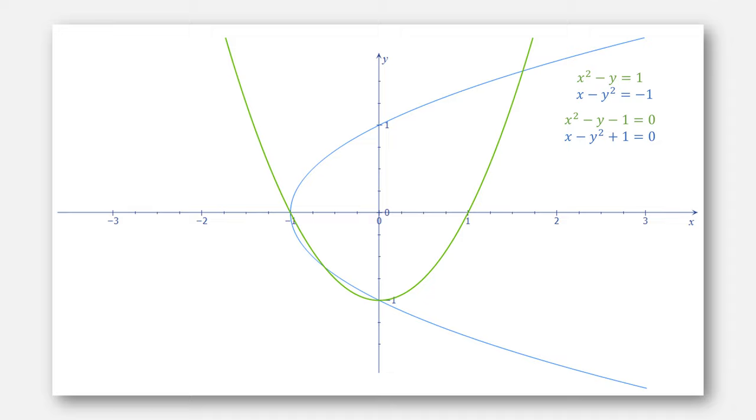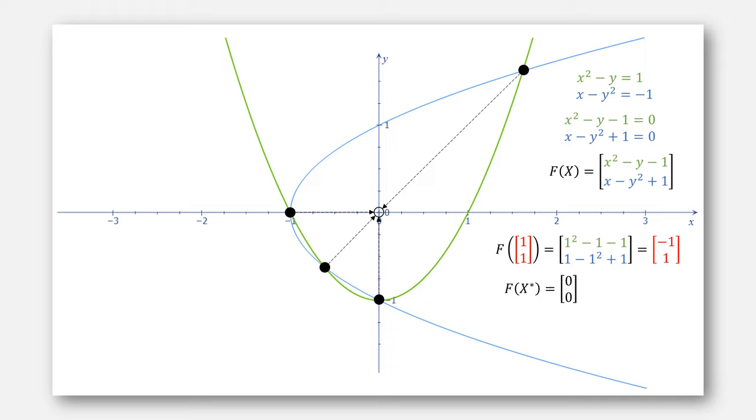Our first step is to write it in terms of zero. We'll call this system F. Let's take the point and evaluate it at F, giving the result of negative 1, 1. Think of F as a transformation onto some input to give you some output. The points that we want are these, where when plugged into F, give a transformation of zero.